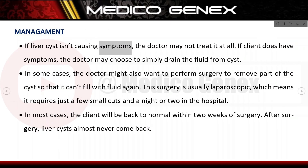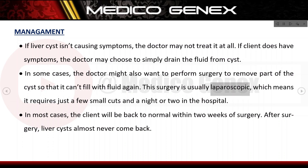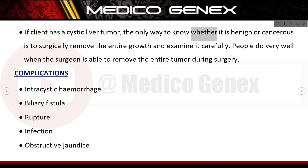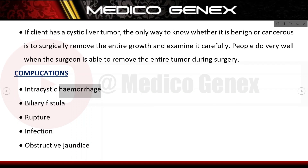Management: if a liver cyst isn't causing symptoms, the doctor may not treat it at all. If the patient does have symptoms, the doctor may choose to simply drain the fluid from the cyst. In some cases, surgery may be performed to remove part of the cyst so it can't fill with fluid again; this surgery is usually laparoscopic, requiring just a few small cuts and a night or two in the hospital. In most cases the patient will be back to normal within two weeks. After surgery, liver cysts almost never come back. If there is a cystic liver tumor, the entire growth must be surgically removed and carefully examined to determine if it is benign or cancerous.